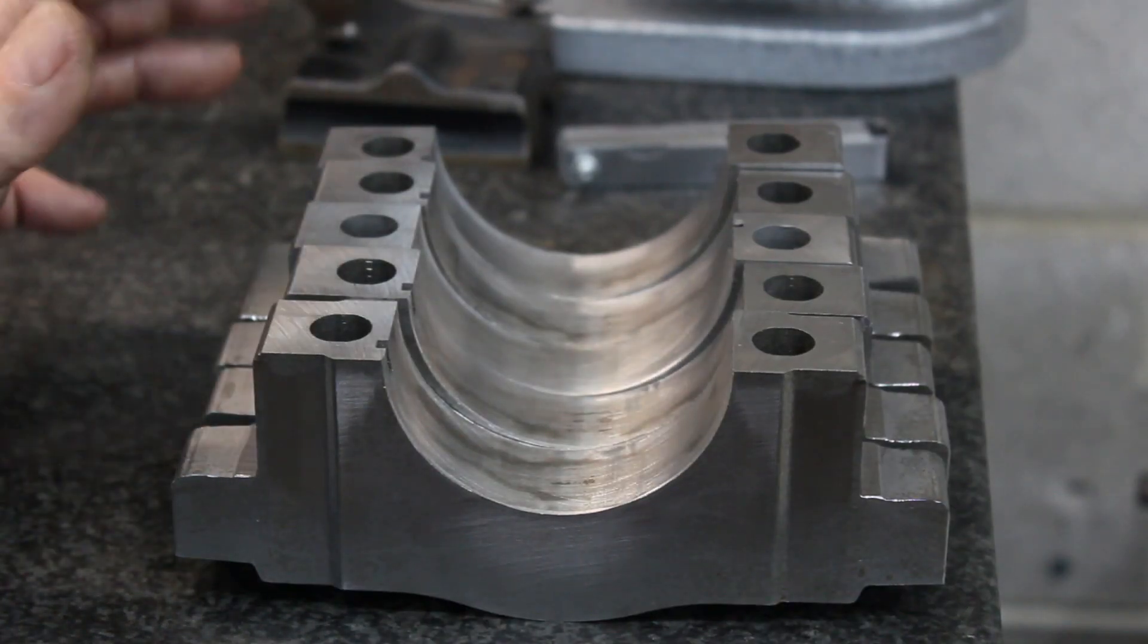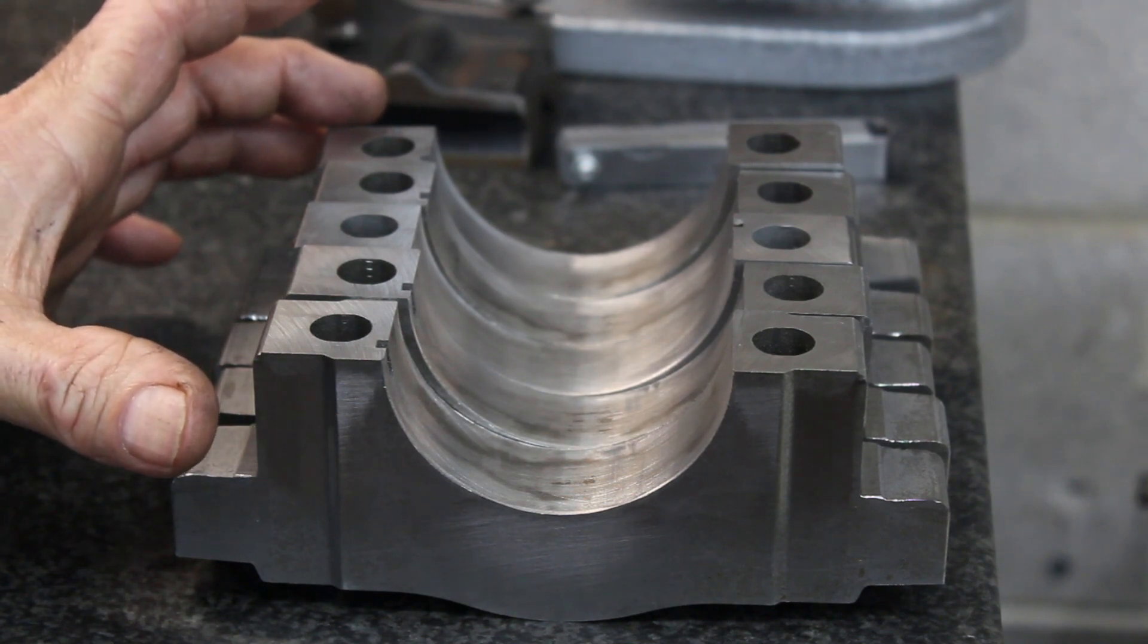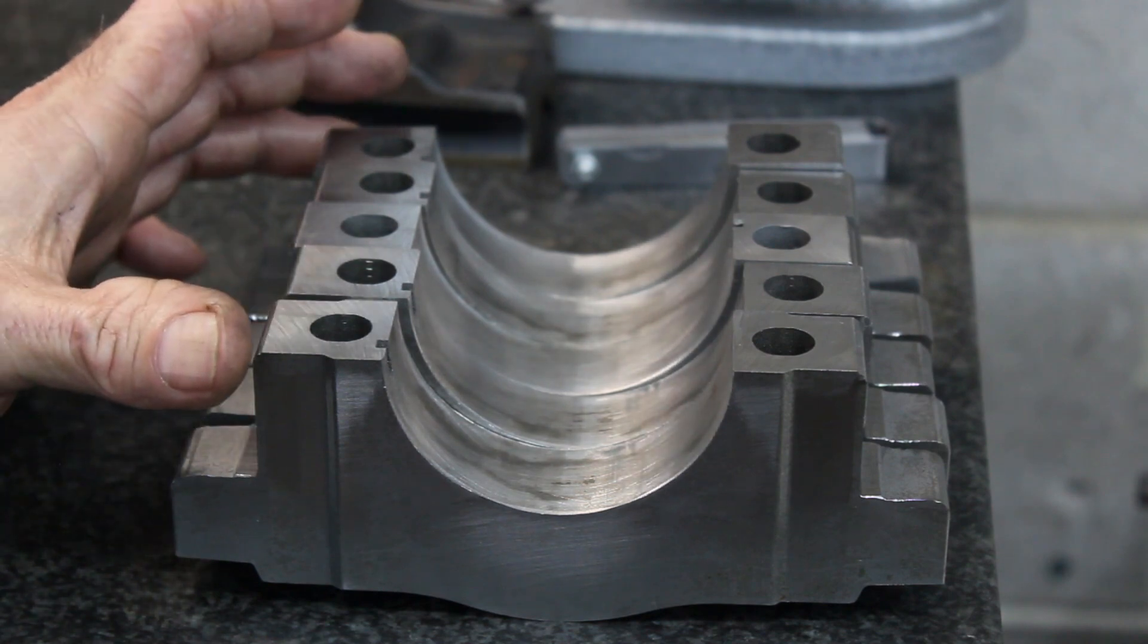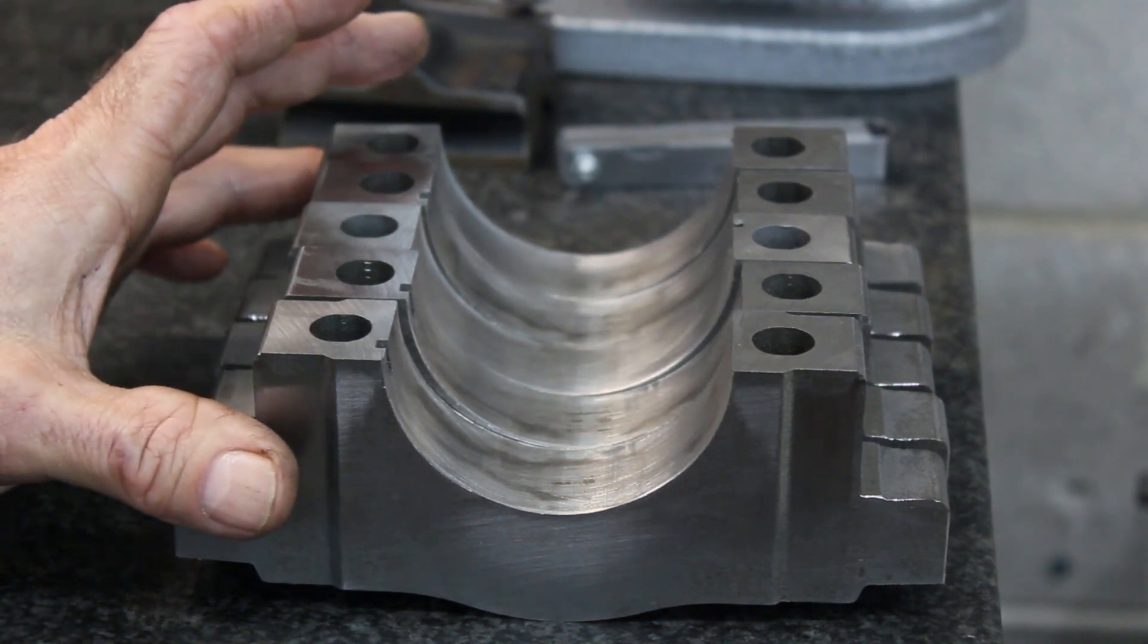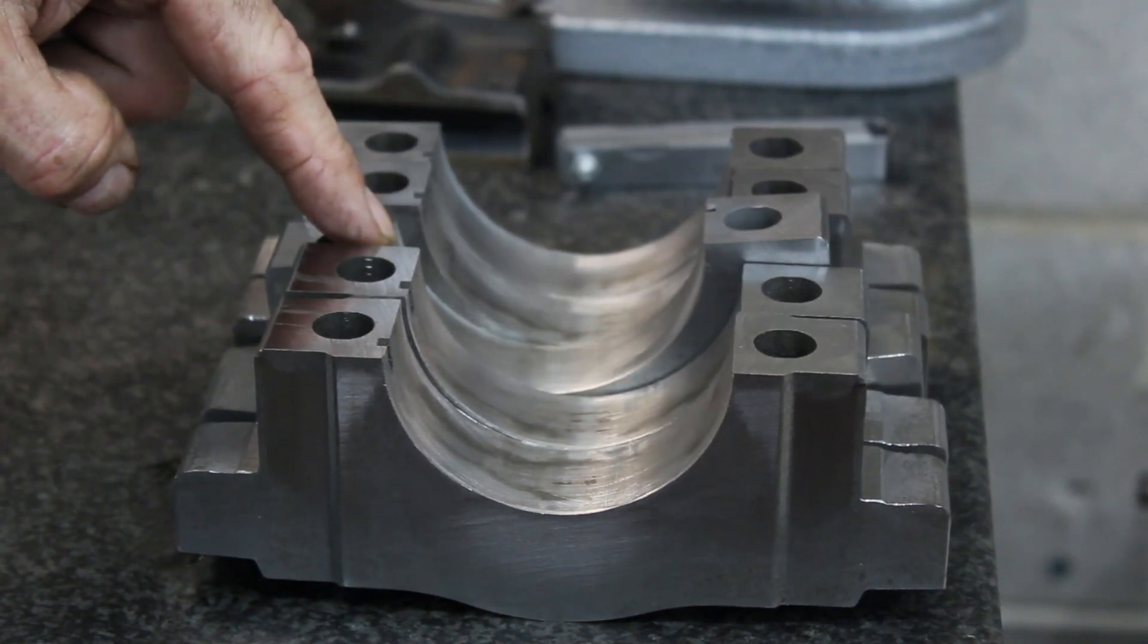So we went ahead and put the caps on. This is a 6.4 Hemi. I don't remember what year, but we put the caps on, torqued it, dusted the line honing through it, and you can see this cap, it pretty much cleaned up.